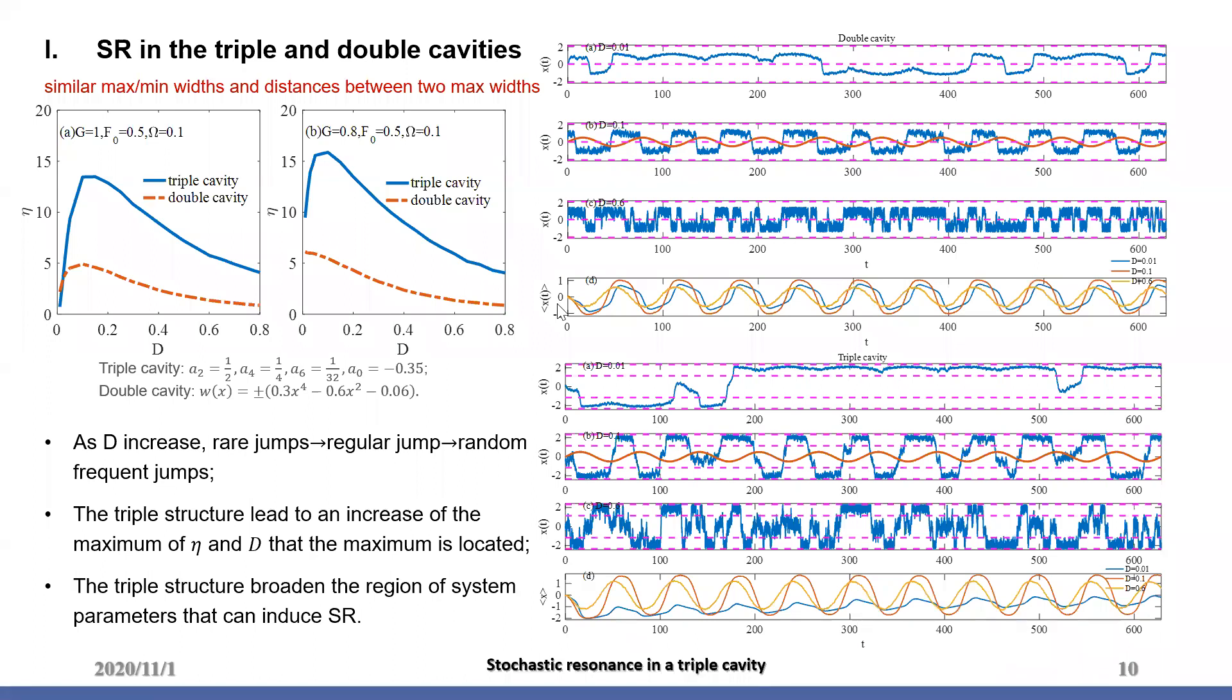Firstly, the comparison of SR in the triple and double cavities that has similar maximum and minimum widths and distance between two maximum widths are studied. From a single trajectory, we find as d increases, the jump between units changes from regular to regular and then to random. This contributes to a maximum in eta-d curves.